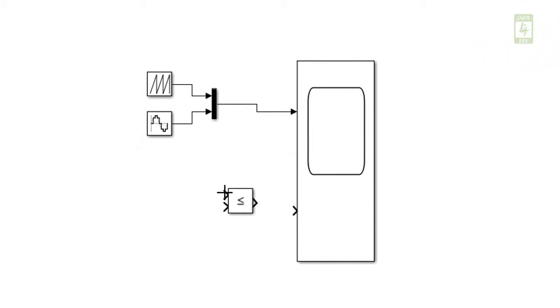Now connect first input with sawtooth input and second input to the sinusoidal error. And connect its output to the scope output. Now just rearrange it for simplicity.